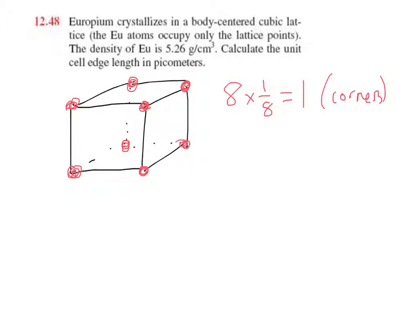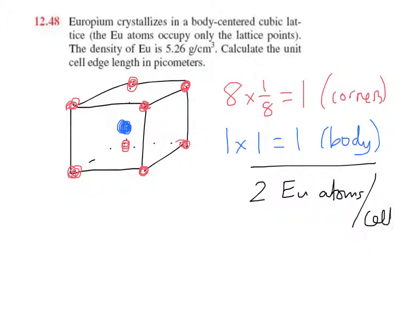So what's the body in body-centered cubic? That just means that there's another one in the body in the center. And of course, since it's inside the cell, it is 100% contained. And that means that when we add these up, we've got two europium atoms in our unit cell.